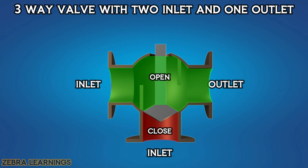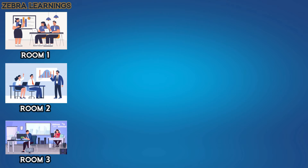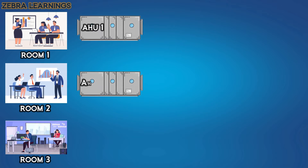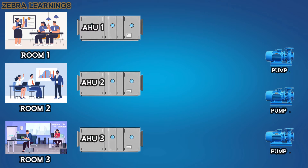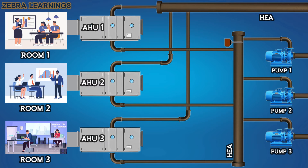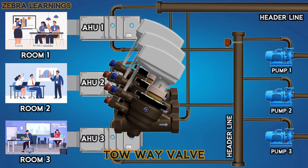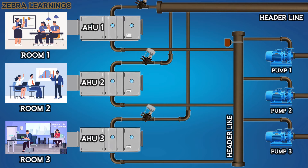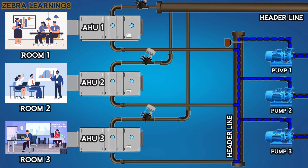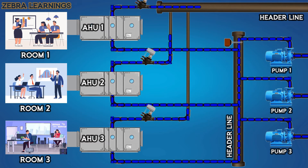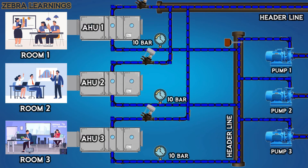This is the difference between 2-way valve and 3-way valve. Now let's take 3 rooms with 1 AHU for each room and 3 pumps. We will install a 2-way valve in each AHU. The pumps are sending water from the chiller to the AHUs. Let's take the pressure in the pipeline as 10 bars.